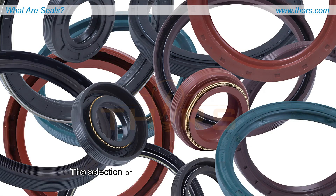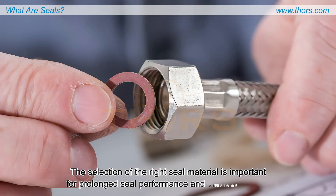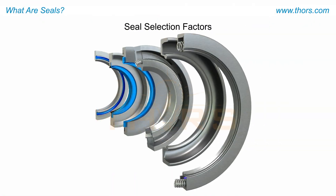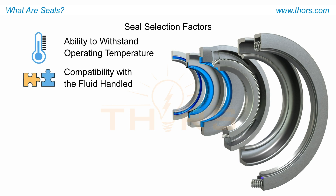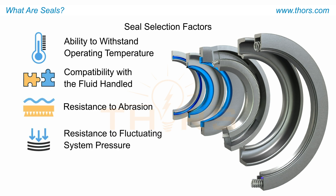The selection of the right seal material is important for prolonged seal performance and efficient sealing. The five most important factors to consider when choosing the best seal material for an application are: ability to withstand operating temperature, compatibility with the fluid handled, resistance to abrasion, resistance to fluctuating system pressure, and cost.